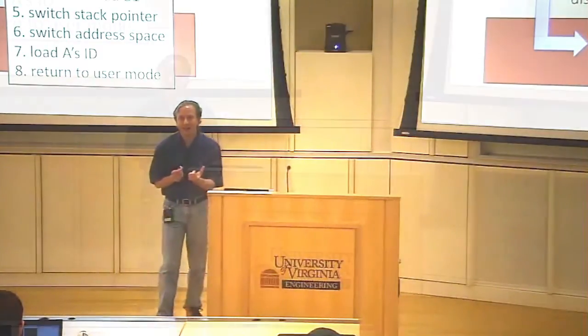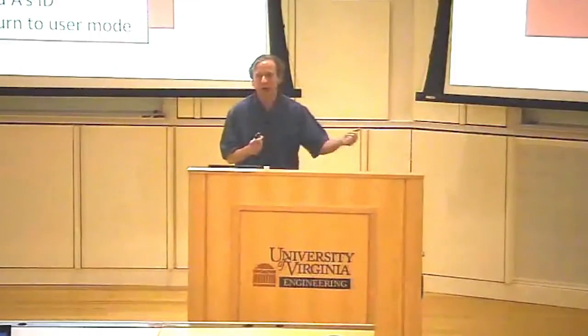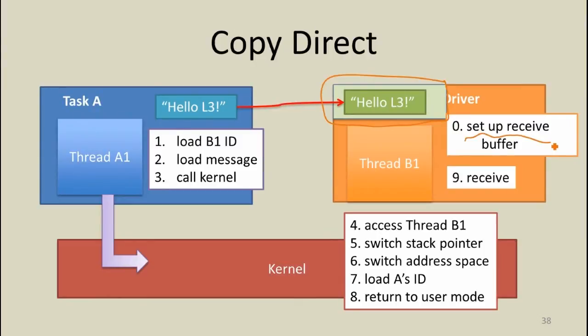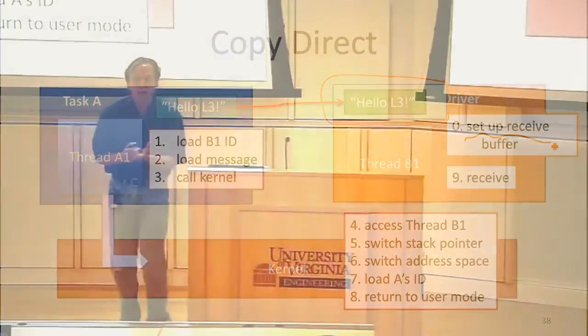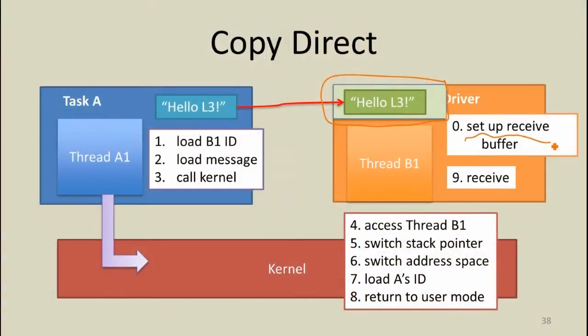If address spaces are really isolated, one task can't see the other's memory — and if they could, it wouldn't be isolated, meaning B could modify A's data. To avoid double copying, process B sets up a data space — shared memory between the tasks — before the send happens, so task A can write into that space directly and we only need one copy. If you want to share data back and forth, you need data spaces in both tasks.